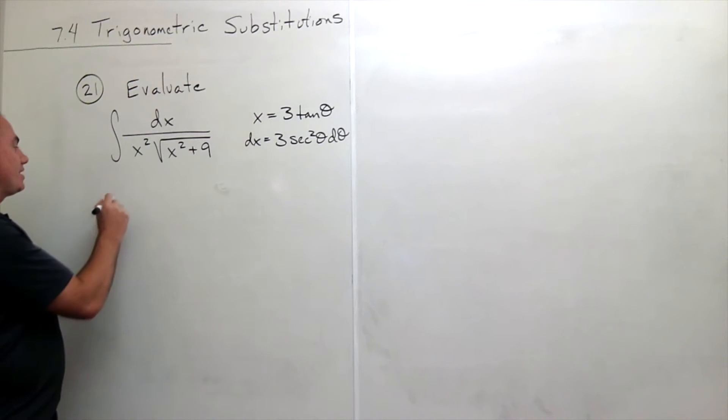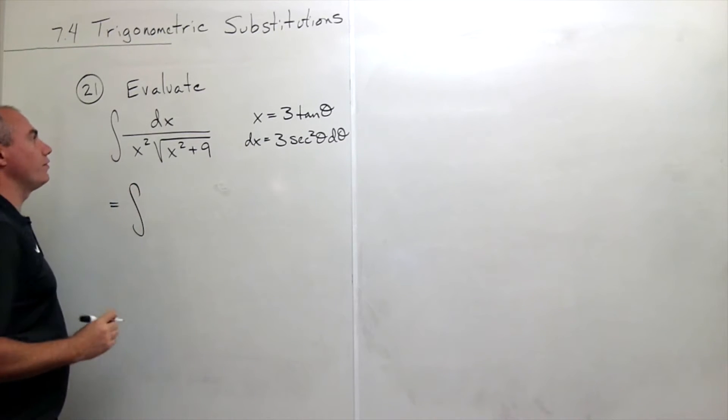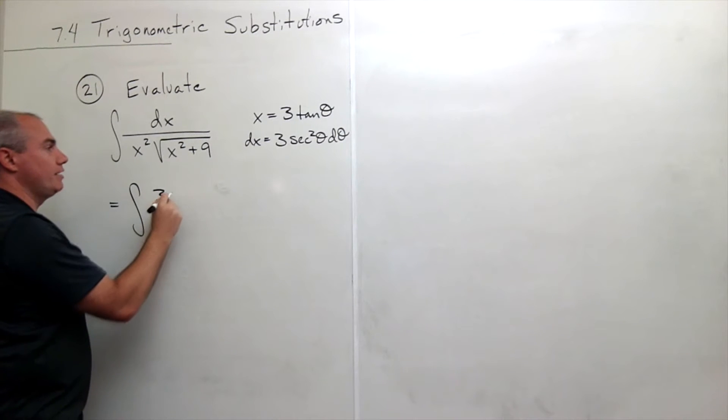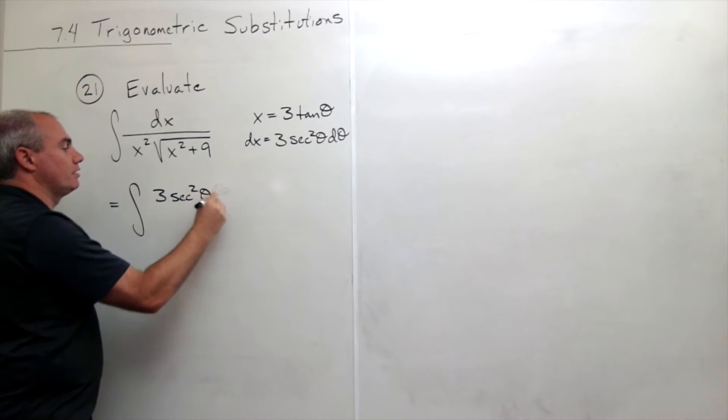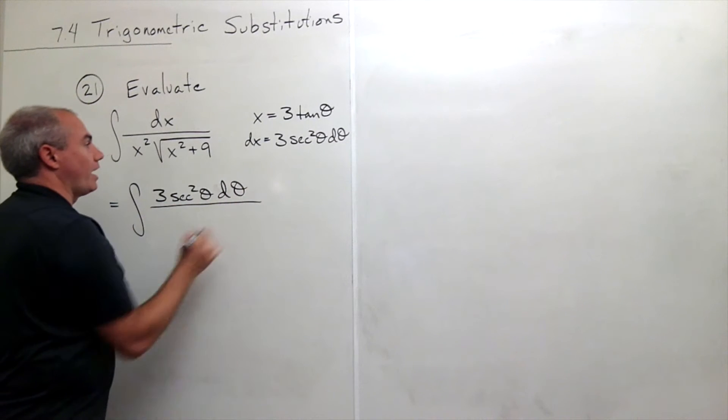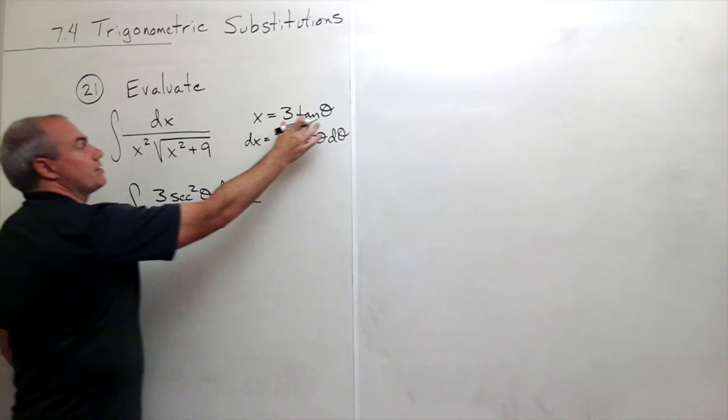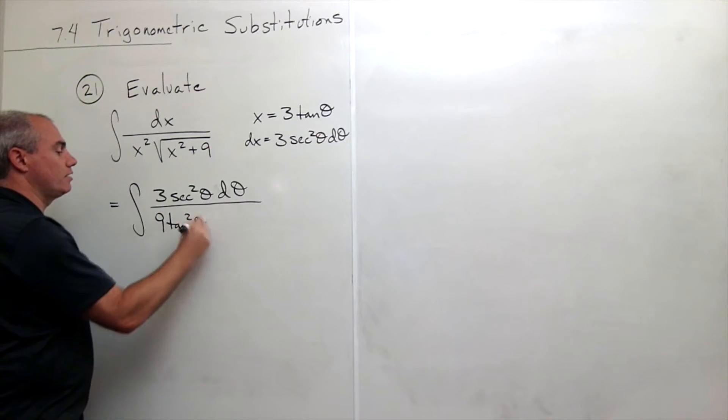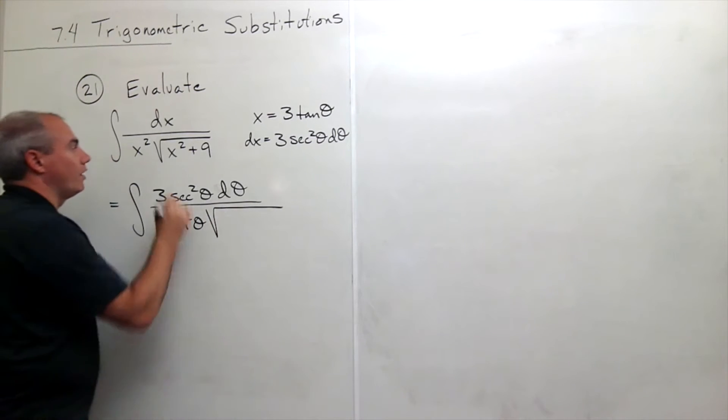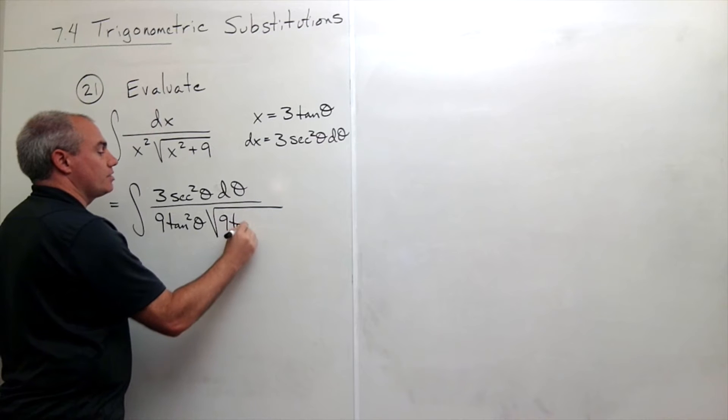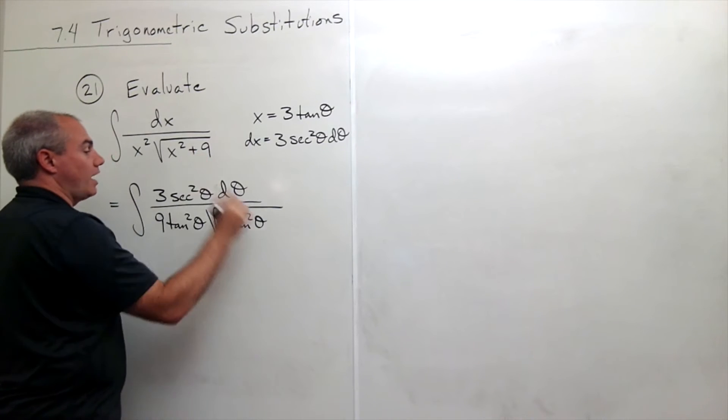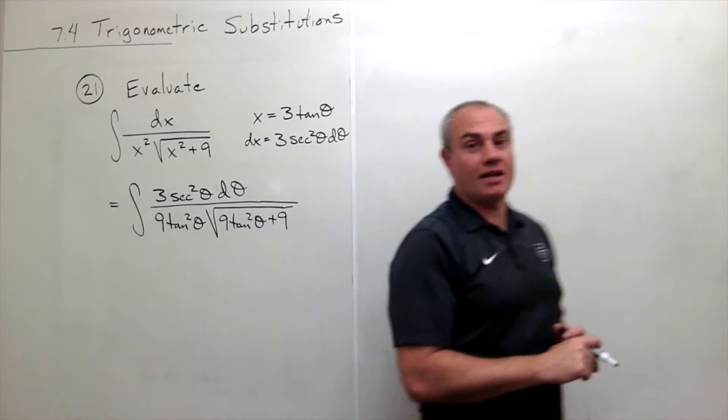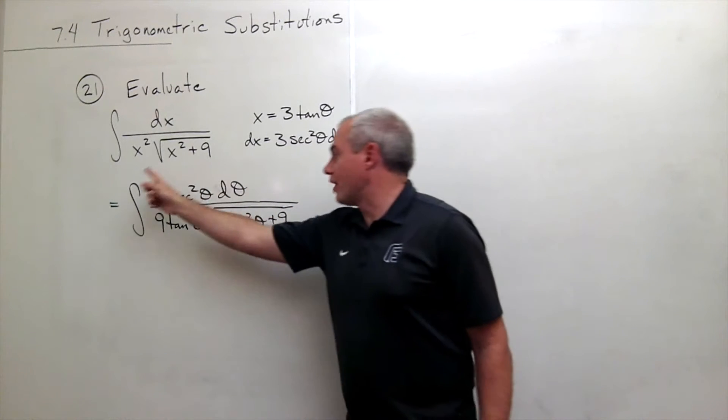Now I'm ready to write in my substitution. So this is the integral of dx is the top, so on top now I have 3 secant squared theta d theta divided by x squared, well that's this guy squared, which is 9 tangent squared theta, times the square root of x squared, which is 9 tangent squared theta, plus 9. I've made my trig substitution and we're right here.